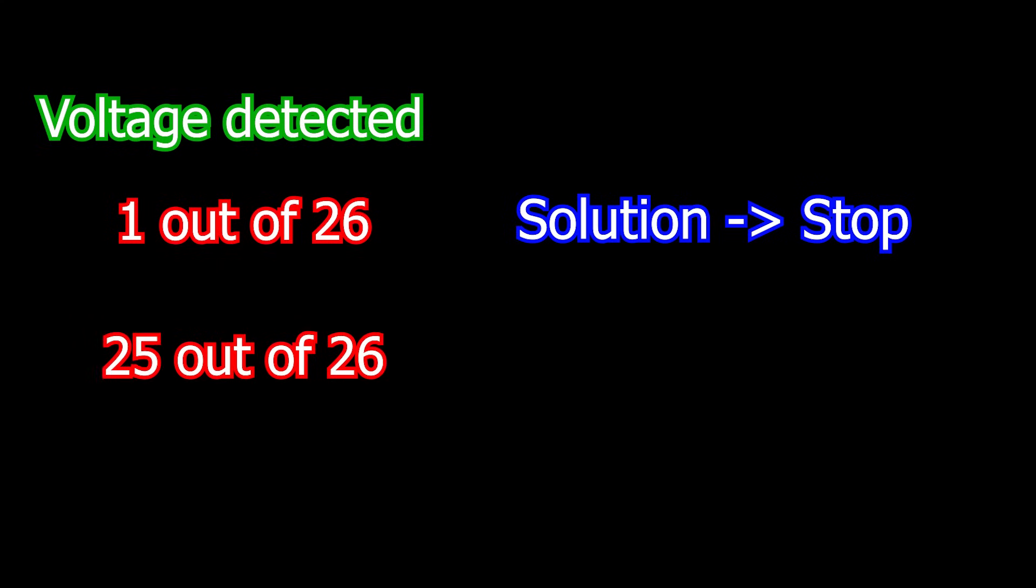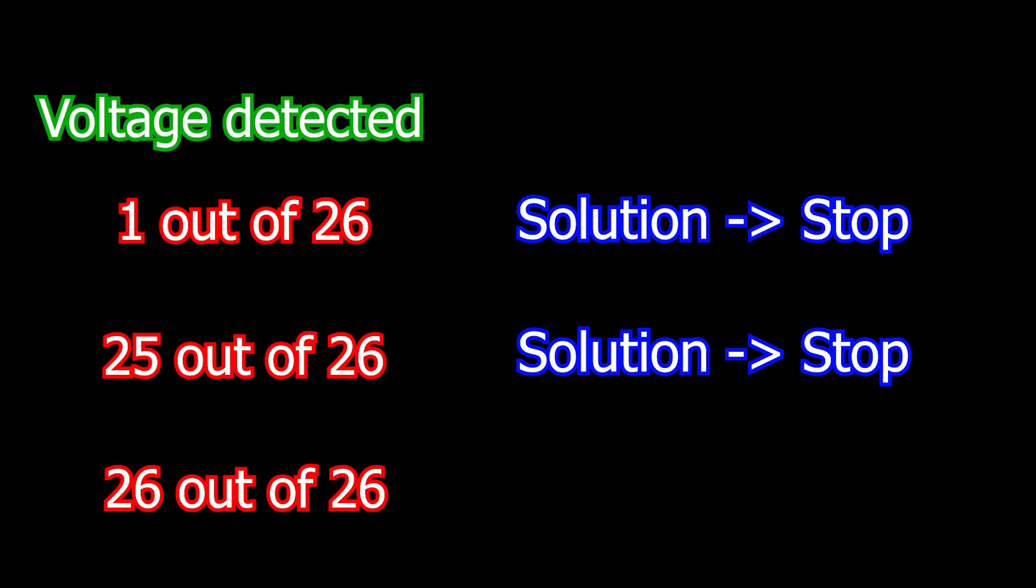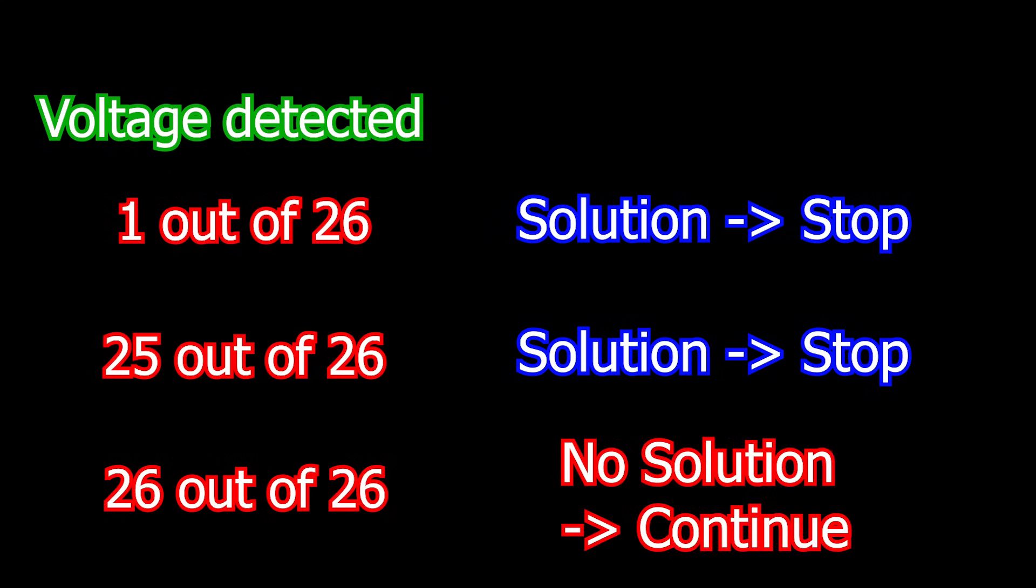If we see one wire with voltage, we have a possible solution and should stop. If we see 25 out of 26 wires with a voltage, we have a potential solution and should stop. But if all 26 wires have a voltage, then this is an invalid setting, and we should continue.